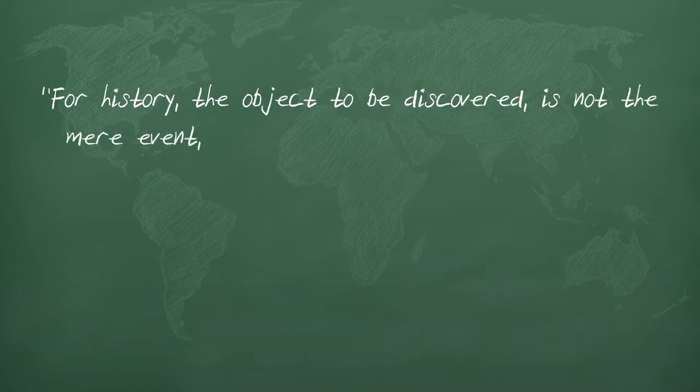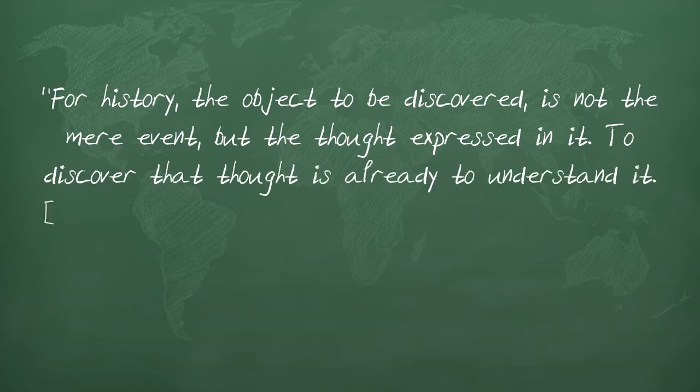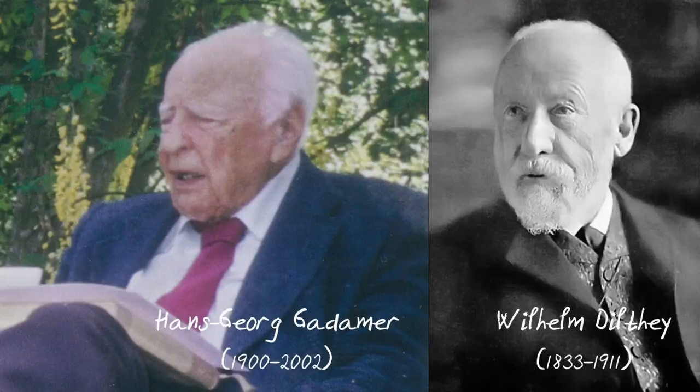For history, the object to be discovered is not the mere event, but the thought expressed in it. To discover that thought is already to understand it. When the historian knows what happened, he already knows why it happened. With this approach, Collingwood manages to combine both the objective and the subjective aspects of history in a way reminiscent of Dilthey and Gadamer, as he sees historical activities as experiences to be lived through in his own mind. The historical activities are objective, or known to him, only because they are also subjective — activities of his own.